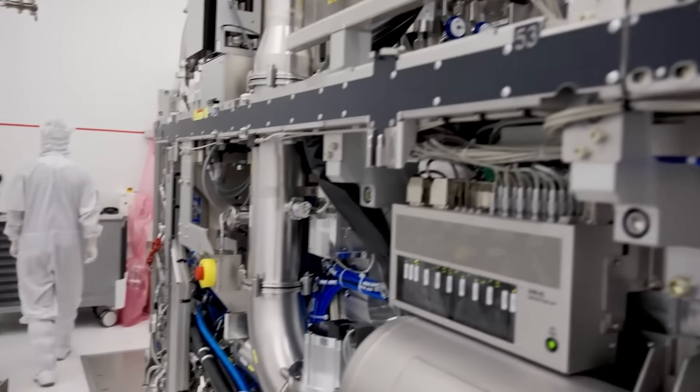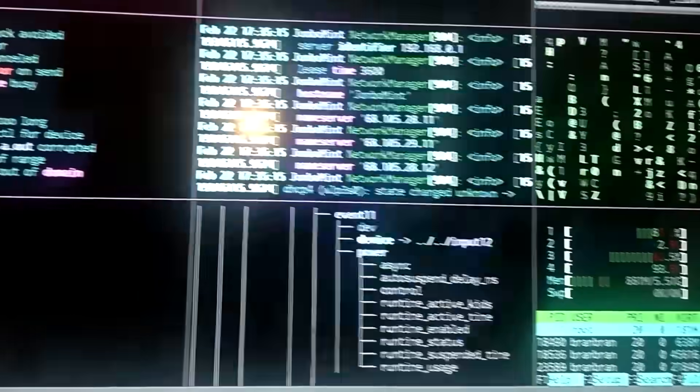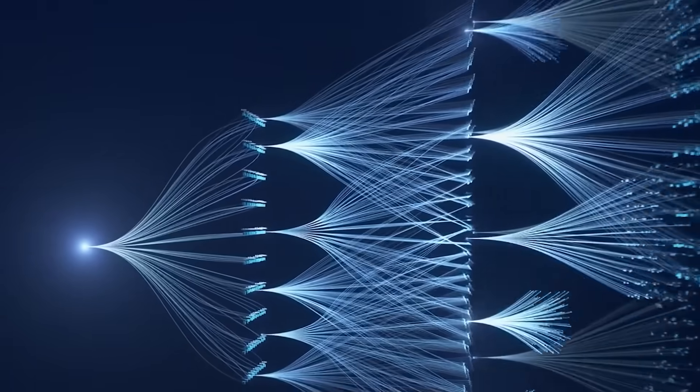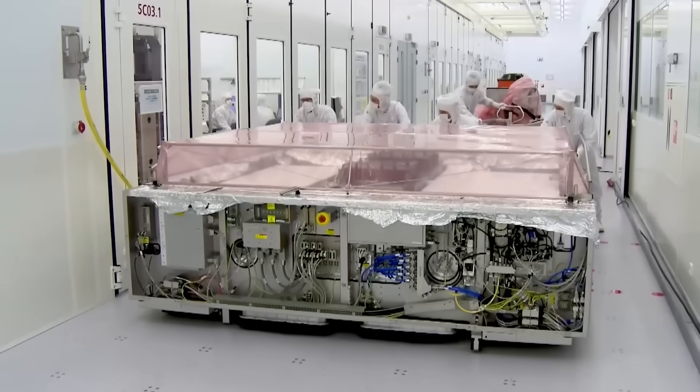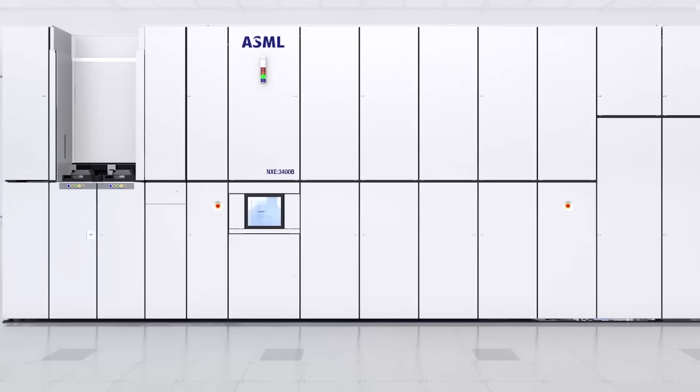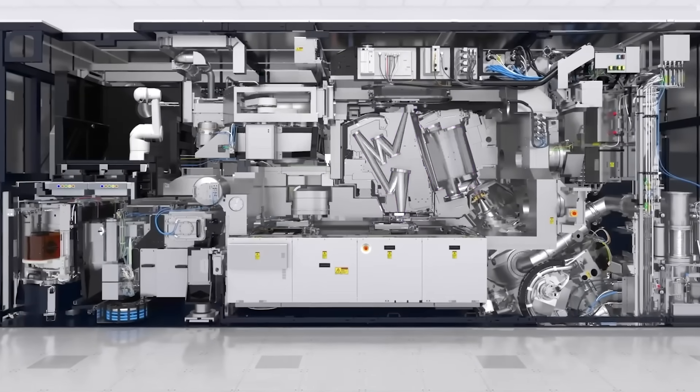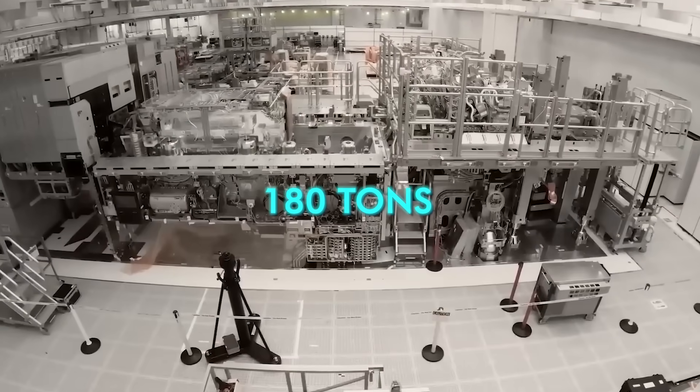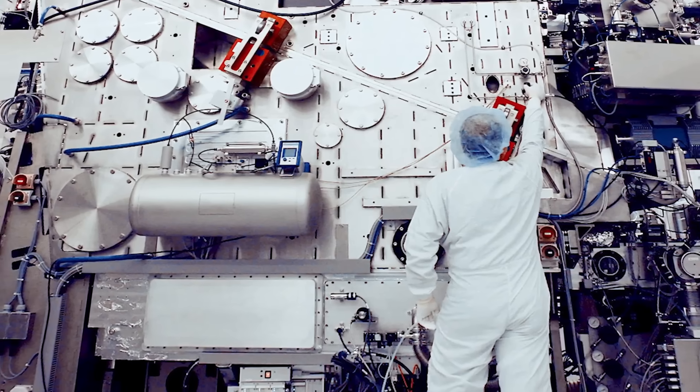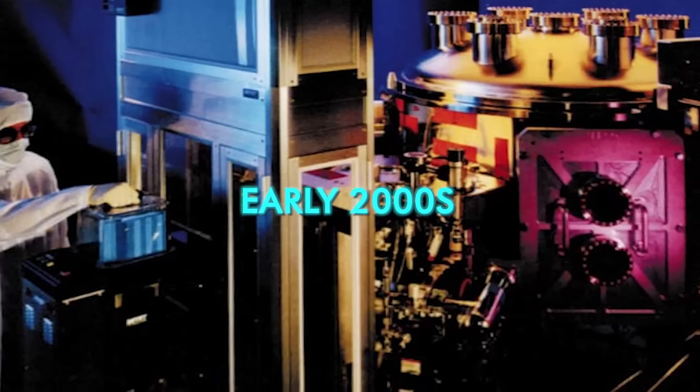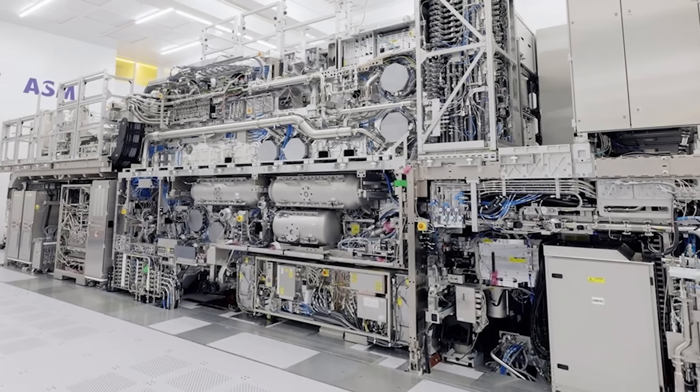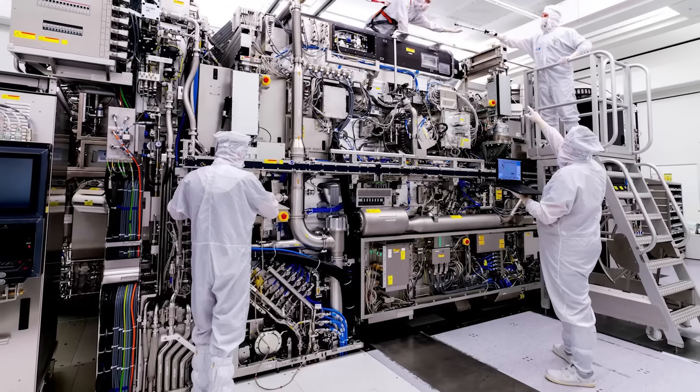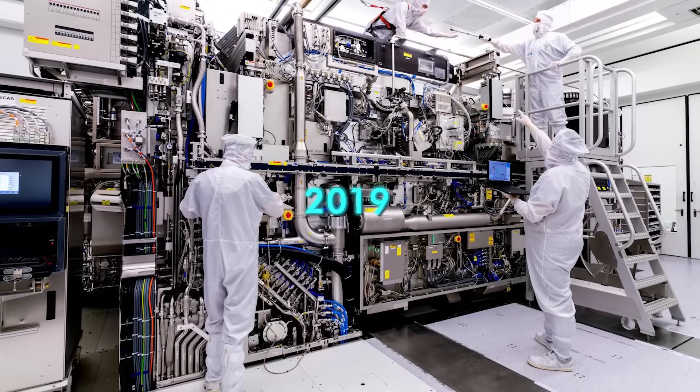Without EUV, the performance, scale, and efficiency that define today's artificial intelligence simply would not exist. Until now, only ASML has been able to build EUV machines at all. Each one costs hundreds of millions of dollars, weighs roughly 180 tons, and integrates hundreds of thousands of ultra-precise components sourced across multiple countries. ASML built its first EUV prototypes in the early 2000s, but it took nearly two decades and billions of euros before the technology reached commercial viability in 2019.